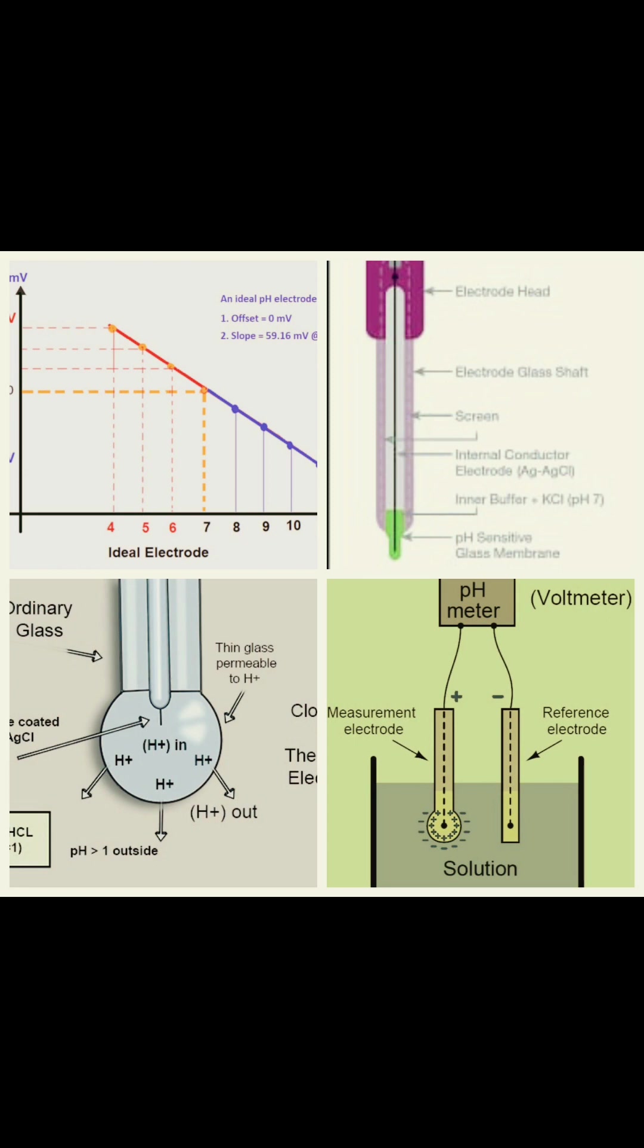The working principle behind the pH meter is potentiometry - this is the measurement of a solution's electric potential or voltage. Also, it depends on what kind of solutions we are going to dip the probe in. If it is acidic solutions, it will efficiently conduct electric current because of the positive hydrogen ions.